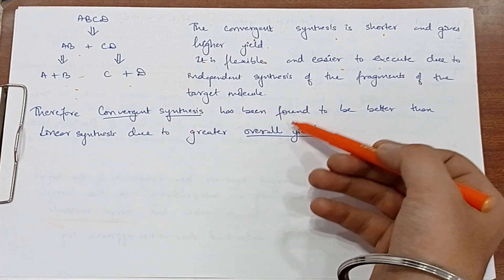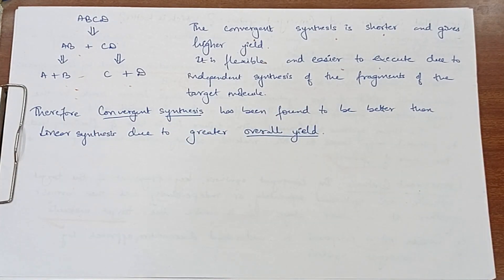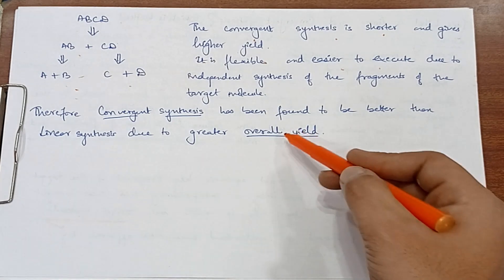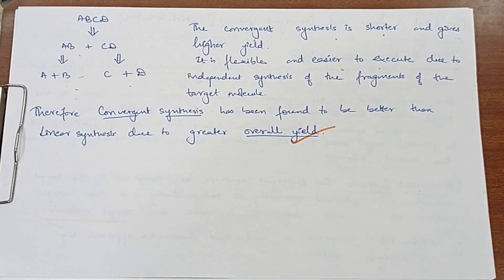Therefore, convergent synthesis has been found to be better than linear synthesis due to greater overall yield. Toh yeh hamari paas zyada yield hai is reaction mein. That is why yeh jo hai reaction, isko hum favorable toh usay hamari yeh better method for the synthesis of the organic molecule.